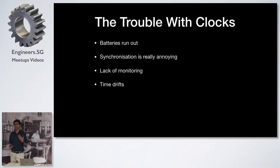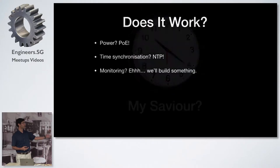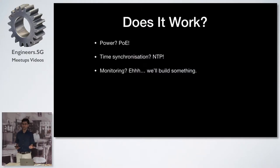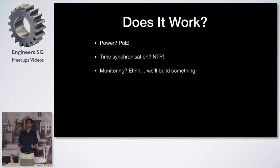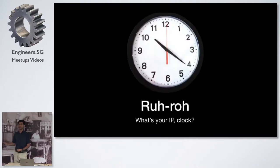We want to do something slightly different from what we normally do in a school. I found this online — a clock from Shanghai Global Time. It's powered over Ethernet and a bunch of stuff. Does it work for my use case? No batteries — it's powered over Ethernet. Does it have time synchronization? Yes, it has NTP. That solves the issue of having to go to every clock and set it manually. Monitoring? We'll build something — it's on the local network so I'm sure we could do something.